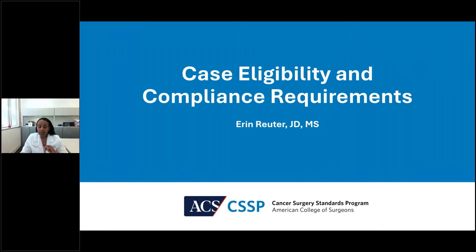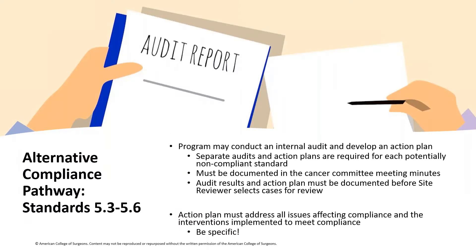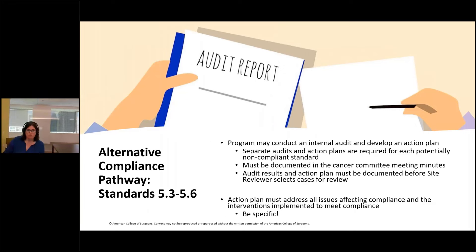These operative standards rolled out four years ago in 2020. For standards 5.3 to 5.6 there was extensive education and implementation planning, with implementation starting January 1, 2023. Site visits this year look for 70% compliance, and future years will require 80%. Now Erin will discuss case eligibility and compliance requirements. For programs reviewed in 2024, an alternative compliance pathway has been added for standards 5.3 through 5.6 — the four operative standards dealing with the operative report; this does not apply to 5.7 and 5.8.